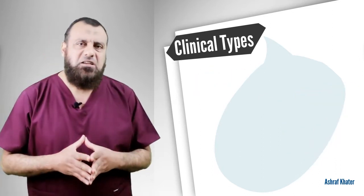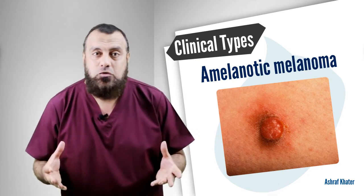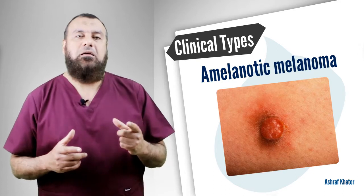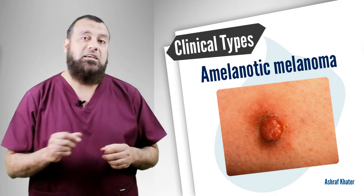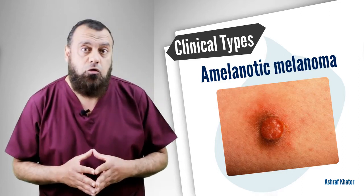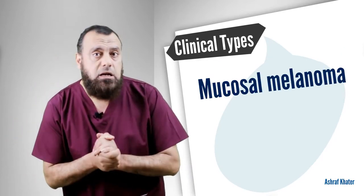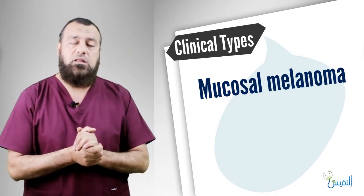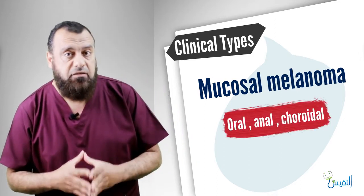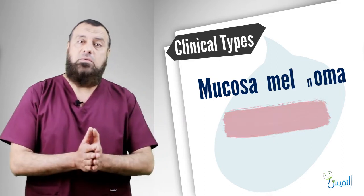The sixth is a very strange type called amelanotic melanoma — a non-pigmented nodule which can be diagnosed only by biopsy and immunostaining for melanoma using S100 protein and other markers. The seventh is mucosal melanoma, which occurs in the mucous membranes of the orifices, like the anus or the buccal cavity, or in the choroid.